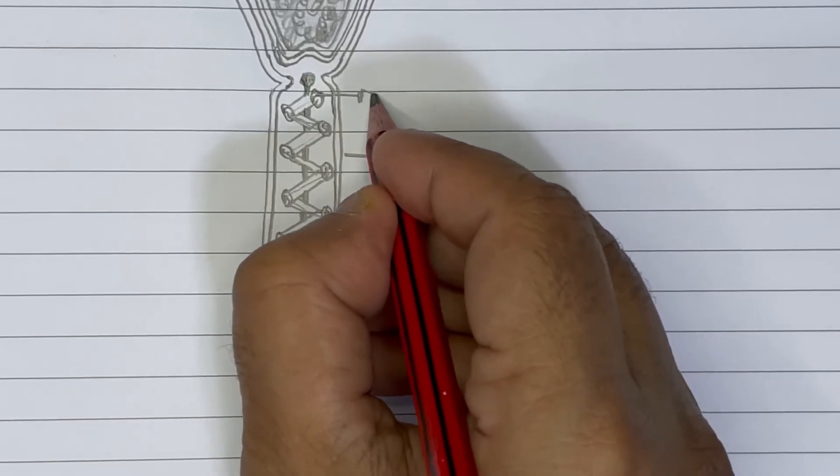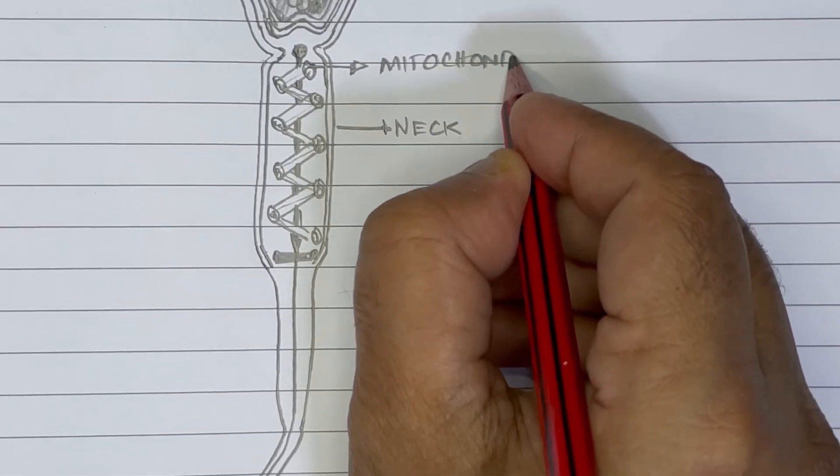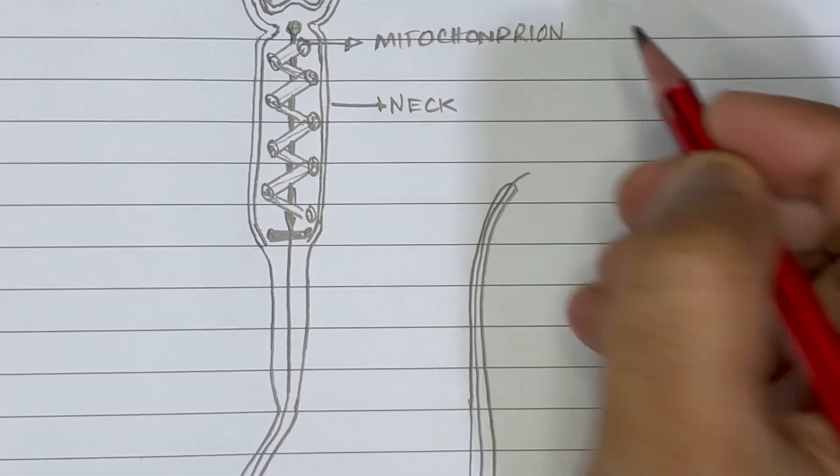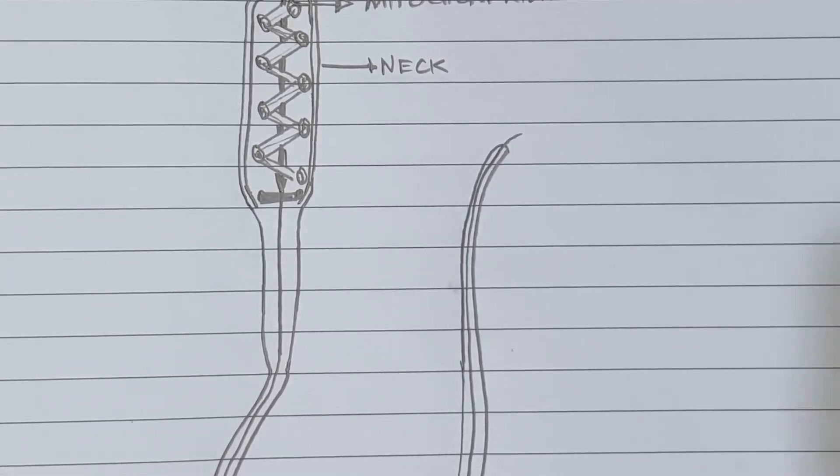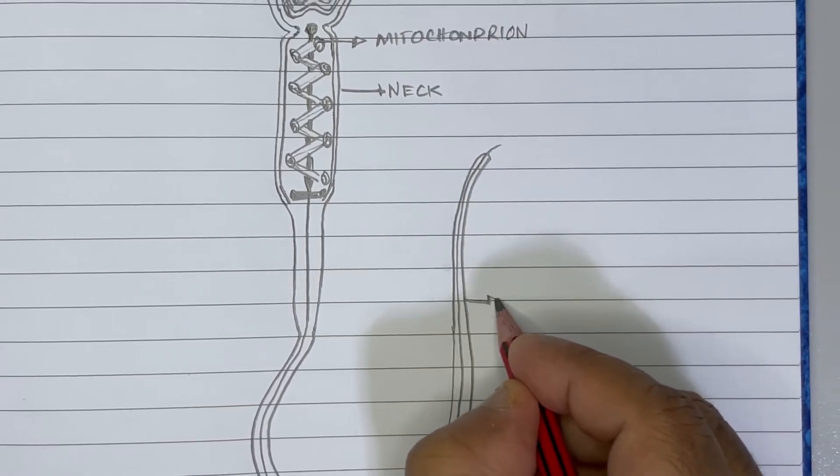This is the vectorially arranged mitochondria. The mitochondrion as it is singular. And this part is the tail.